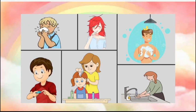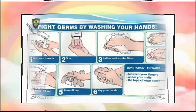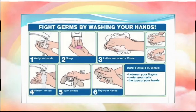And there is a boy cutting his nails and a girl with a comb. Now describe it once again. This is the way you can keep yourself clean. The answer: how can we keep ourselves clean? First — bath daily. Second — wash your hands. Third — brush your teeth. Hume daily nahana hai, apne haath dhone hain, aur brush karna hai.